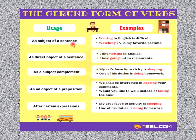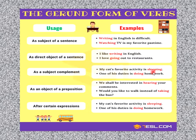As the subject of a sentence, whenever we use a gerund as a subject it looks like: 'Writing in English is difficult' — here 'writing' is the subject. As a direct object: 'I like writing in English' — here 'writing' is the direct object. As a subject complement: 'My favorite activity is sleeping' — here 'sleeping' is the subject complement.